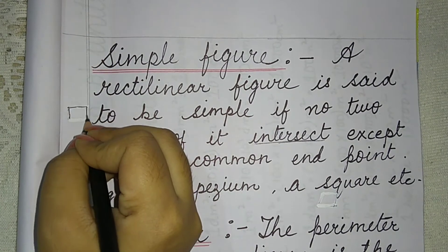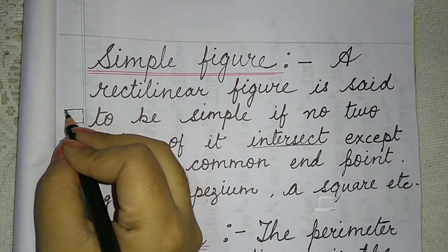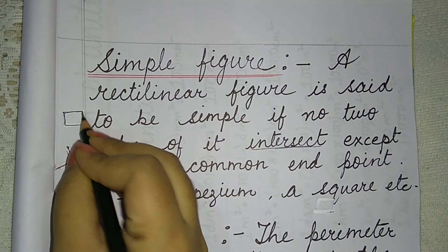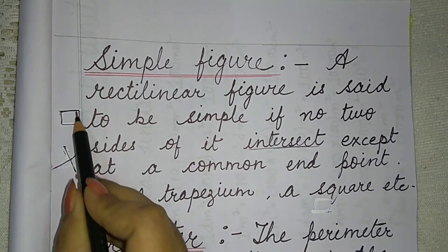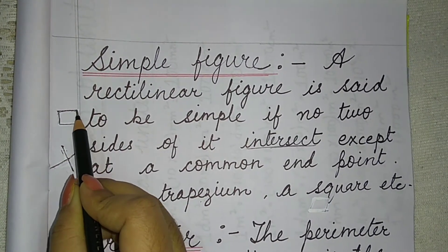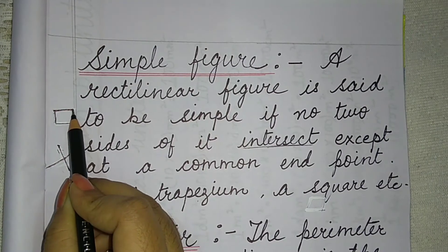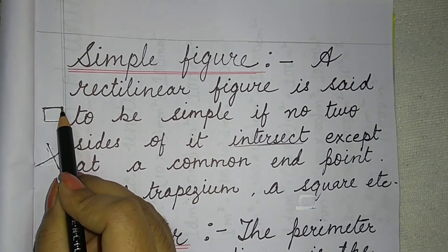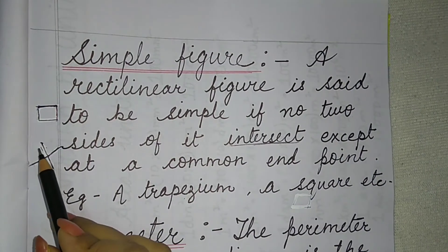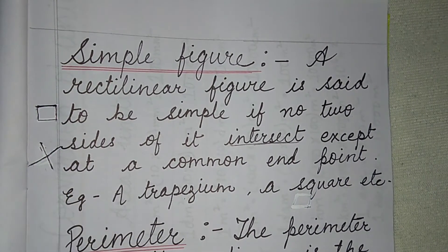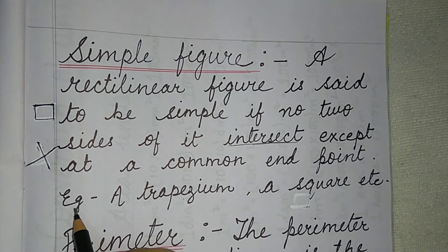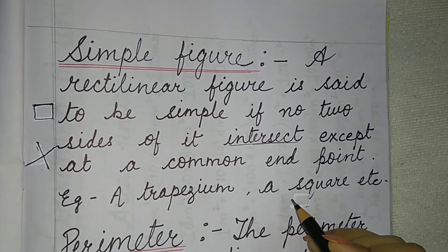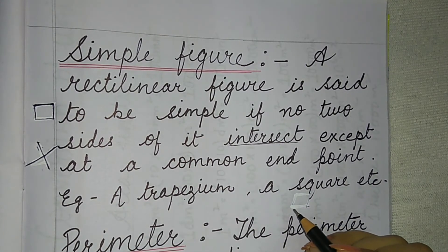Suppose you are taking a square. This is a line segment and this is a line segment. In these two line segments, you can see a common end point. Here is a point that is common. It is also common and it is also common. But there is no intersection of this type. For example, a trapezium and a square, a parallelogram, a rectangle, etc.